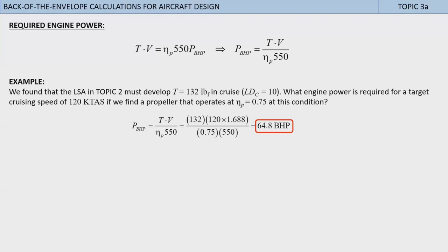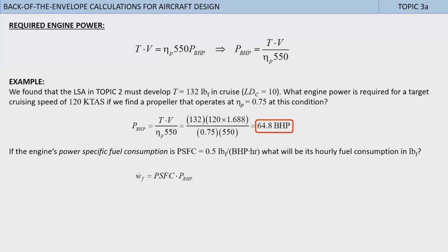What engine power is required for a target cruising speed of 120 kTAS if we find a propeller that operates at propeller efficiency of 0.75 at this condition? Using the above equation, we substitute the thrust of 132 pounds from topic 2 and the 120 kTAS target cruising speed. Note that it must be multiplied by 1.688 to convert it to feet per second. Thus, the resulting engine power must be just about 65 brake horsepower. Now, a typical engine in this class would have a power-specific fuel consumption of about 0.5 pounds per bhp per hour.